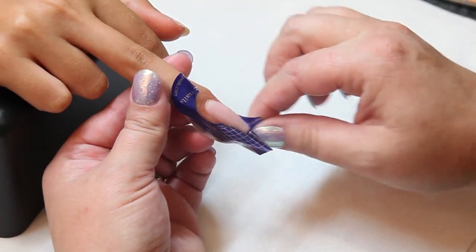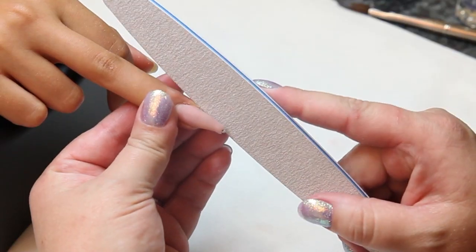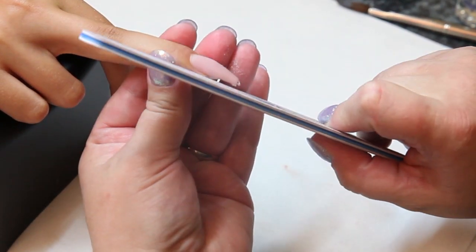When the nail is set, you're going to remove the form, you're going to file your shape coming straight out from the side wall like a stiletto.